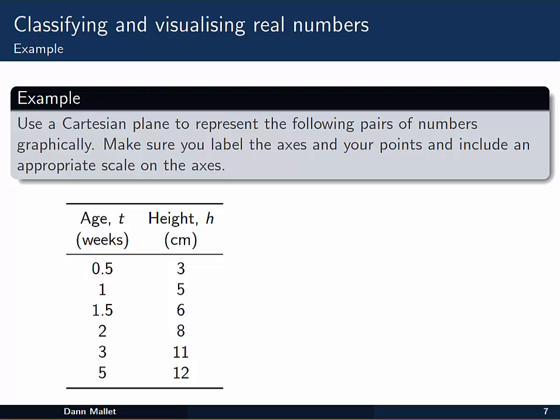Let's have a look at an example for that one. I want to use a Cartesian plane to represent the following pairs of numbers, these ones here, graphically. And I want to make sure that I label the axis so that I know what the graph is actually, what this Cartesian plane is a picture of. And I want to put the points on there and label those as well, including appropriate scales. We like to have the scales representing real distances in some sense.